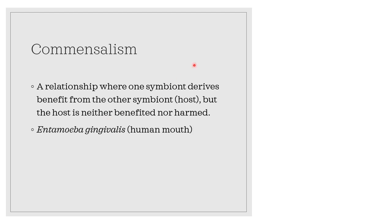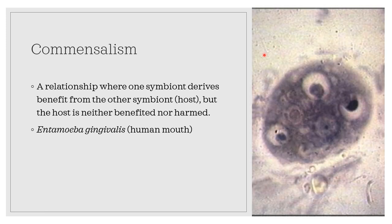An example of this is Entamoeba gingivalis in the human mouth. Entamoeba gingivalis is considered to be an obligatory commensal in the mouth of humans. It feeds on bacteria, food, and dead epithelial cells, but never harms the healthy tissue in the mouth.